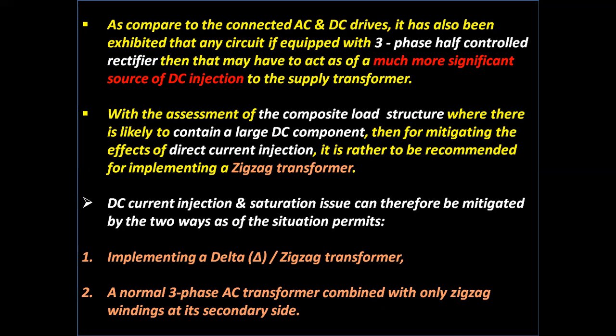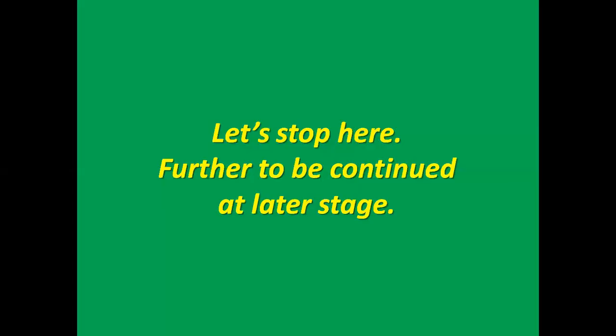DC current interaction and saturation issues can be mitigated by two ways: number one, implementing a delta-zigzag transformer where the primary side is delta and the secondary side is zigzag; or number two, a normal three-phase AC transformer combined with only a zigzag winding at its secondary side. Let's stop here — further to be continued at a latter stage. Thank you for listening to the video.